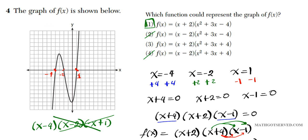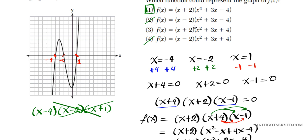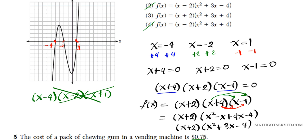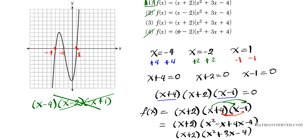For problem four, we're given a graph and we're asked to create a polynomial function that represents it. Your roots are what x is equal to. If you want to convert your roots into factors, you have to set each one equal to zero before you multiply. You take the opposite of the roots before you can put them in factored form — you don't say x minus four times x minus two times x plus one, that's incorrect. The factored form is not completely expanded; we left out the x plus two piece, then use FOIL to simplify. You end up with option number one as your correct answer.